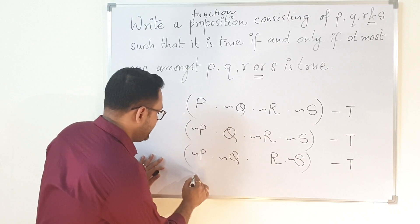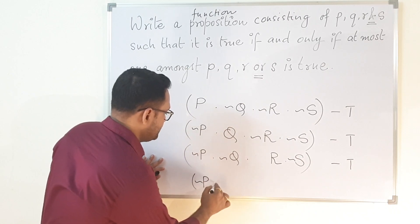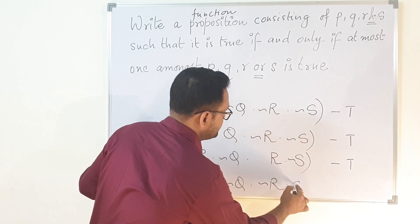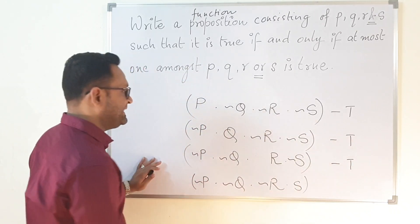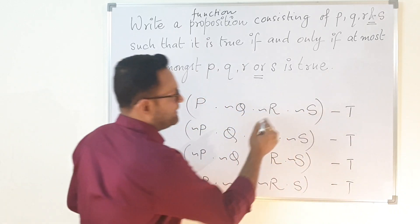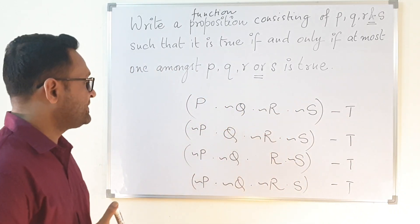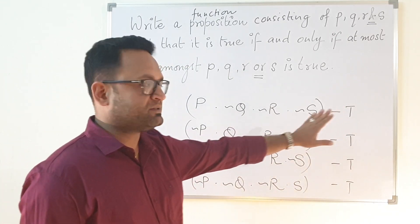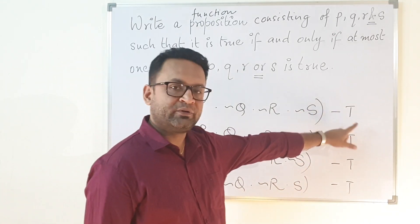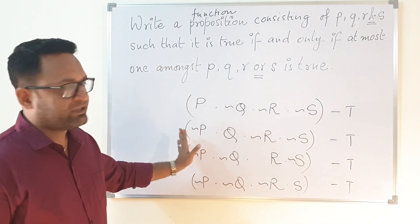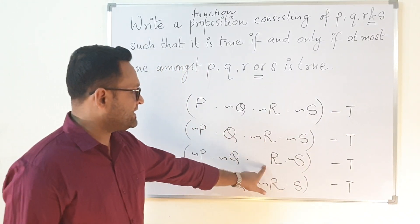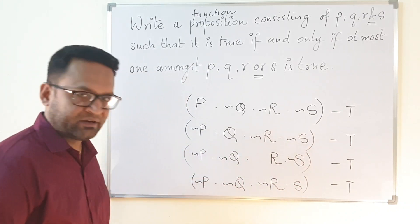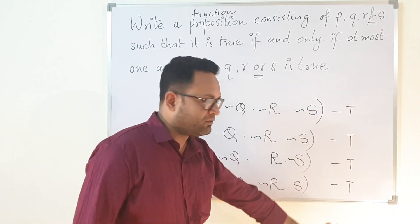The next function: P is false, Q is also false, R is also false, but S is true. To maintain symmetry, I took 1 true value at a single point of time. In case one: only P is true, Q, R and S are false, so the whole value will be true. In case two: Q is true, the rest all are false. Case three: R is true, rest all false. Case four: S is true, rest all false. So the value of all of them will be true.